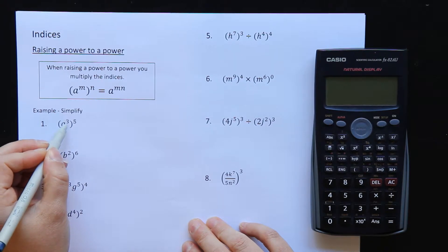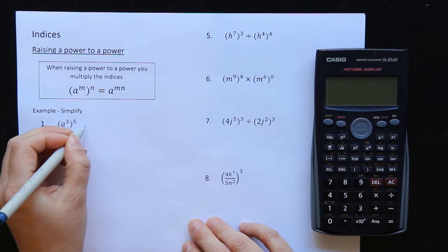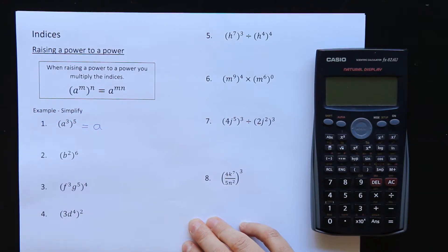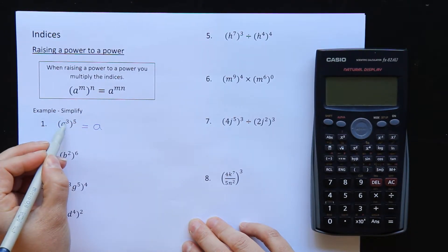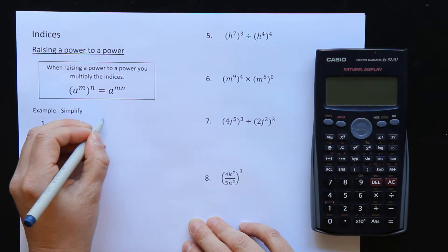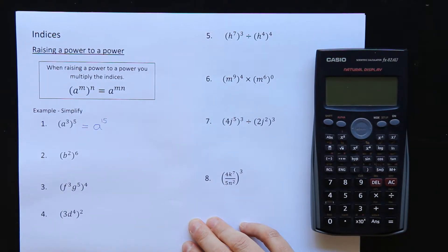If I have a to the power of 3 to the power of 5, a is my base. All I have to do is multiply. 3 times 5 is 15. That's it.